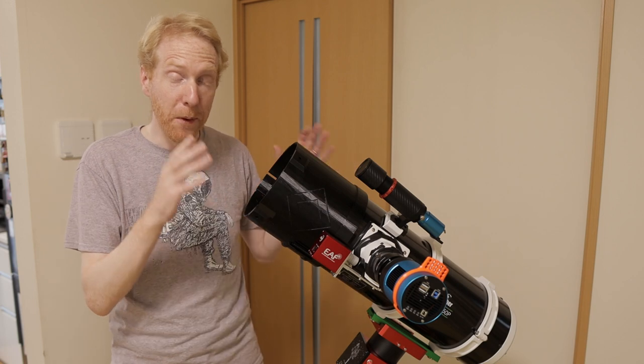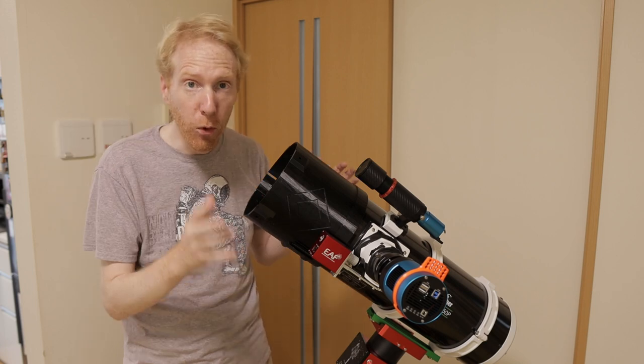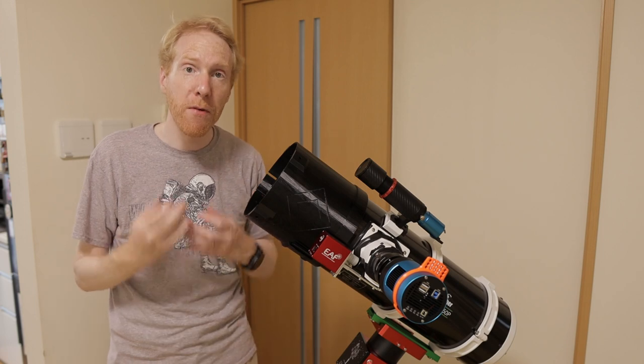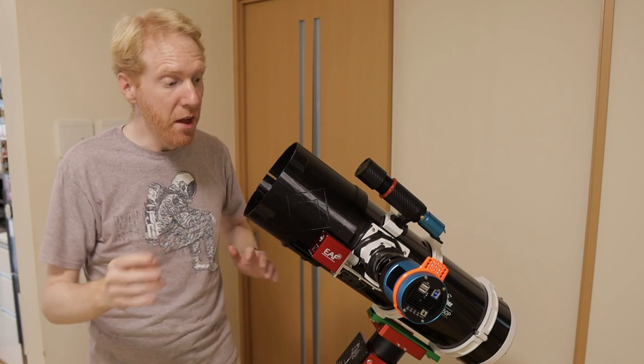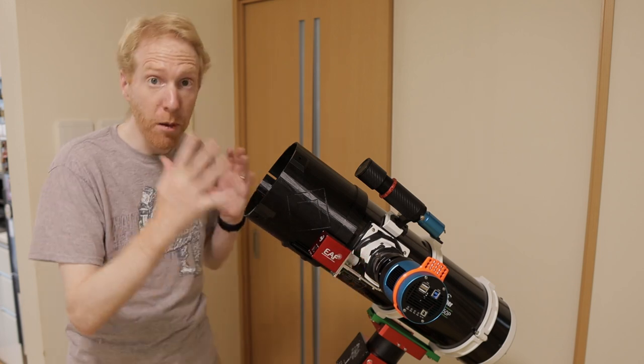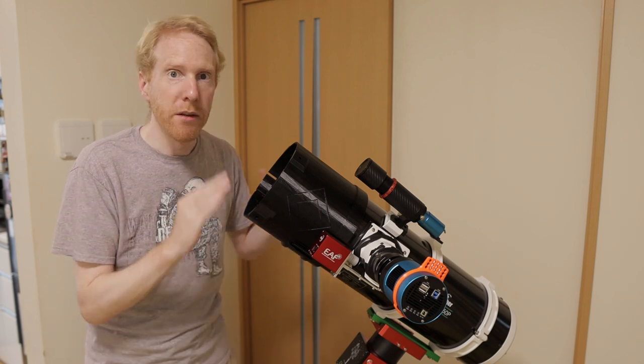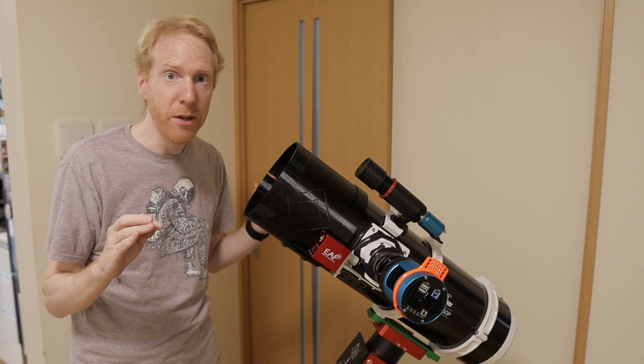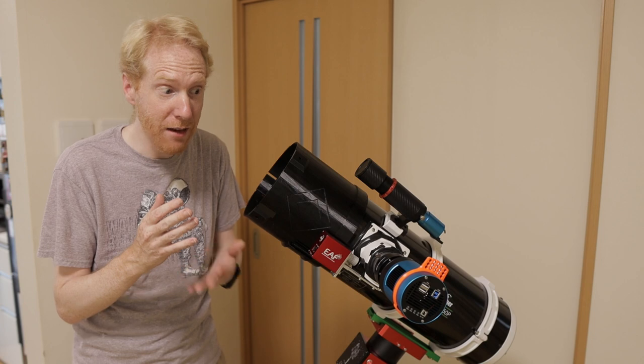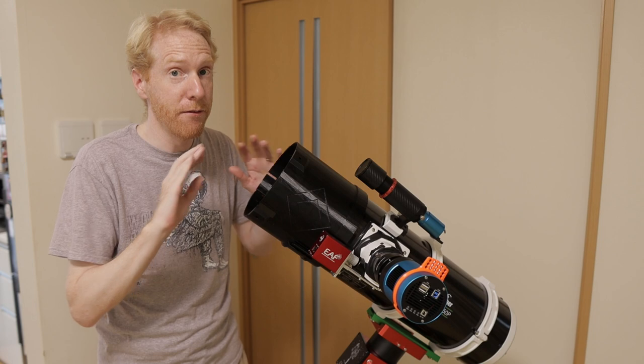Now this particular telescope is the Skywatcher Quattro 150P. It came with a focal reducer slash coma corrector in the box and it cost me 450 US dollars. It came with a terrible focuser that I still have installed. I haven't replaced it yet. Some samples of the same telescope come with a better focuser, but we haven't been able to determine what the pattern is. Some people in Europe have the better focuser, some people in Europe have the terrible focuser. Is there no rhyme or reason to it? Is it the lottery? I have no idea.